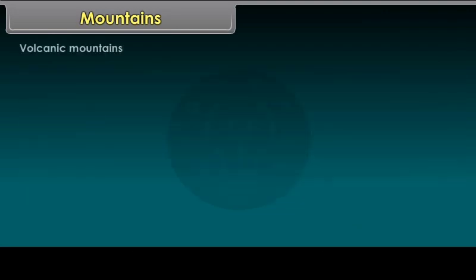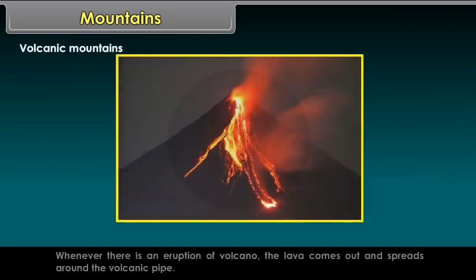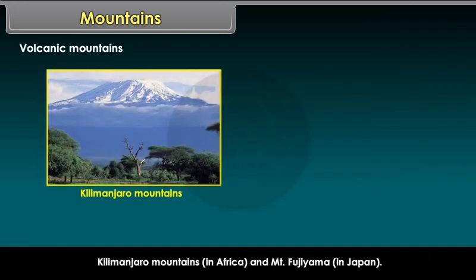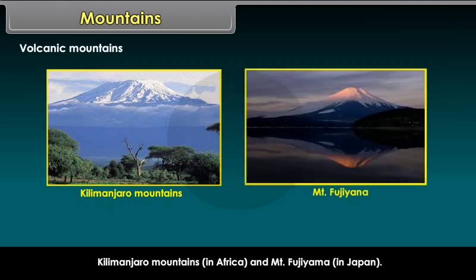Volcanic Mountains. Whenever there is an eruption of a volcano, the lava comes out and spreads around the volcanic pipe. With the passage of time, this lava solidifies and gives rise to a cone-shaped mountain called a Volcanic Mountain. Examples include Kilimanjaro in Africa and Mount Fujiyama in Japan.